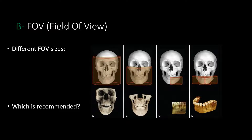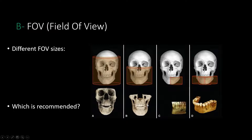Number two is field of view. In the picture in front of us, we have multiple sizes of CBCTs. Number A is a full face CBCT. B is a full maxilla and mandible CBCT, so it's a dual arch CBCT. C is a quadrant CBCT, and D is a full arch mandible CBCT. Which one do you really need for guided surgery?